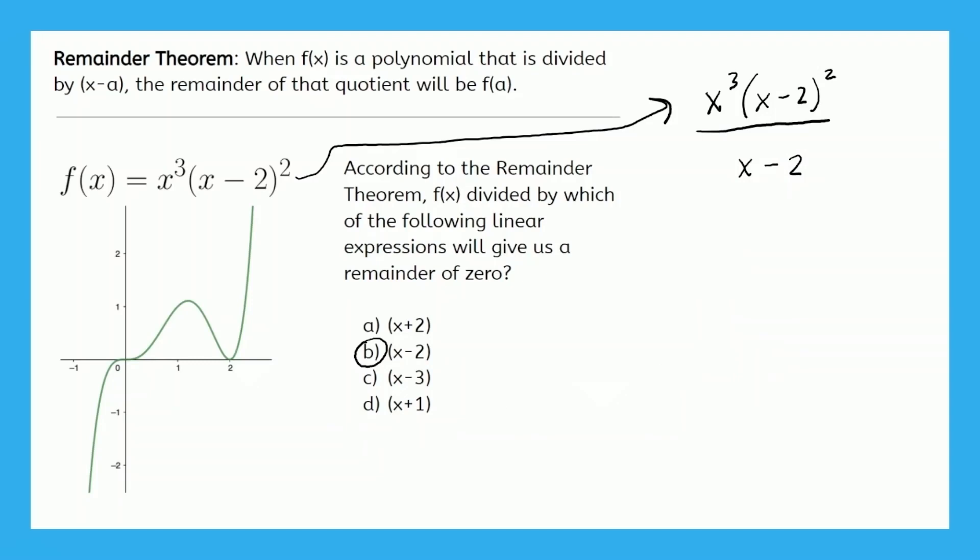So a quick review, whenever you see a question like this, whether or not you have a graph, all you need to do is ask the question: which of our answer options is a factor of our original function? Whichever one is a factor tells us which linear expression will give us a remainder of 0, according to the remainder theorem. Who would have guessed that the remainder theorem is so interconnected with the zeros of the graph of a function? And that is everything. See you next time.